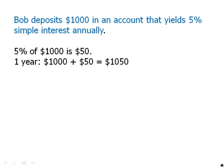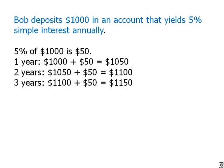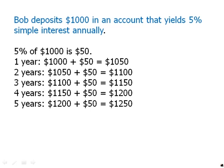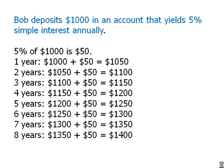So in the first year, $1,000 plus $50, we get $1,050. Then in the second year, we add $50 again, then $50 again. And in each year, all we're doing is adding that same amount — $50. So the account is rising by $50 each year. The exact same dollar amount is added each time.